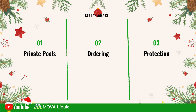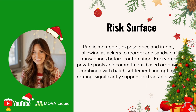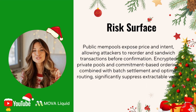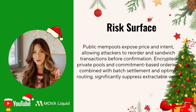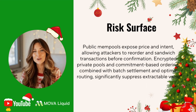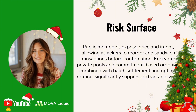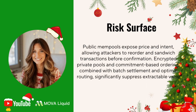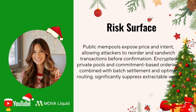Together, these measures reduce MEV from a systemic opportunity to a residual edge case. At its core, MEV exists because someone can know what you will do in advance and change the order. The solution is to reduce what can be known and restrict how ordering can be changed. Encrypted private pools hide submissions, commitment-based ordering locks transactions before reveal, batch windows flatten micro-timing advantages, and routing avoids high-risk paths.